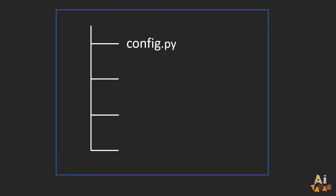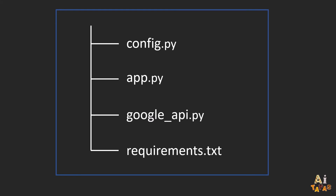The code base is pretty simple: just a config.py file for configurations, an app.py file for the main script, a googleapi.py file to place the functions for using the Google Cloud APIs, and lastly, the requirements.txt to list the packages used. After inputting your configurations, just run the app.py file and your bot is ready to talk.